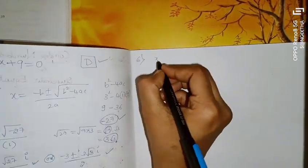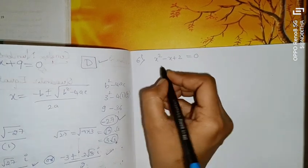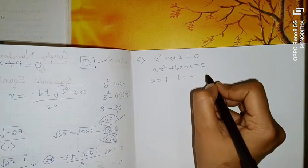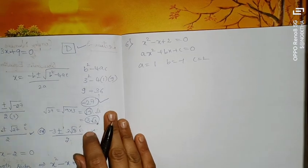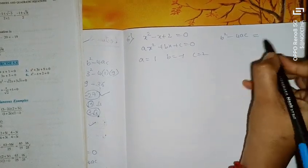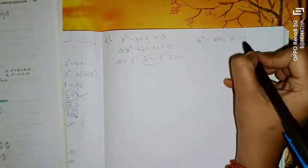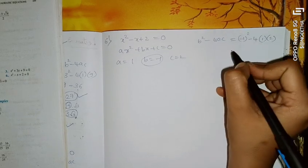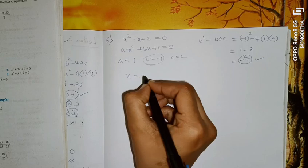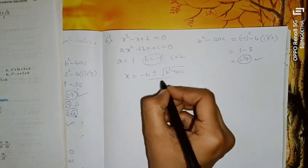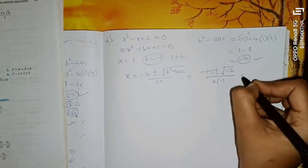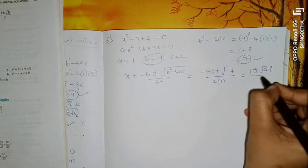Question 6: x² − x + 2 = 0. Comparing: a = 1, b = −1, c = 2. Then b² − 4ac = (−1)² − 4(1)(2) = 1 − 8 = −7. So x = (1 ± √7·i) / 2. That's very easy.